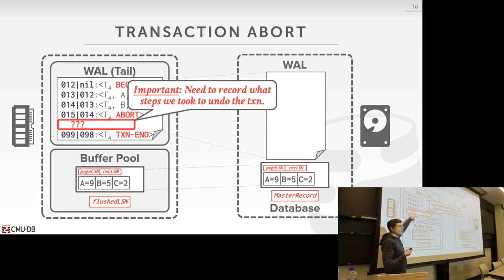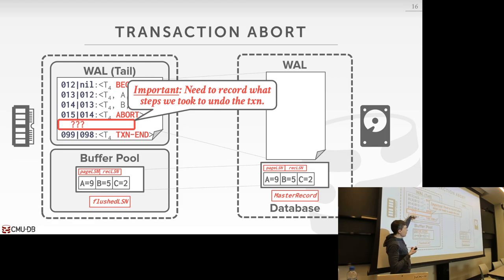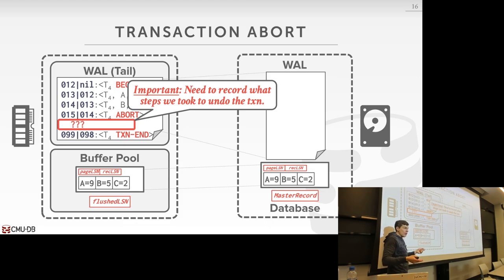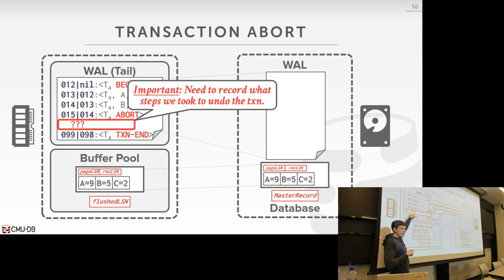Why do we even have the previous LSN? Her question is: could you just find all the things that are T4 and figure out the things you need to reverse? Yes, but what if you're running a high-end system doing a million transactions per second and you crash — at any given time you could have maybe a hundred thousand transactions in flight. To avoid having to scan everything over and over again to find exactly what you need to reverse, the prevLSN is just a helper to get us there — it's not required for correctness, we use it for convenience.